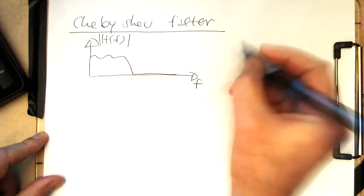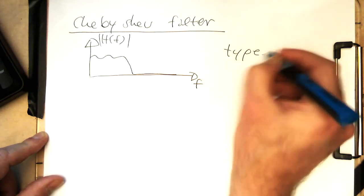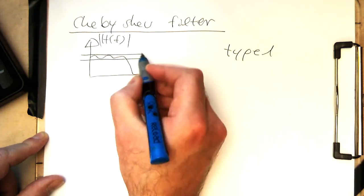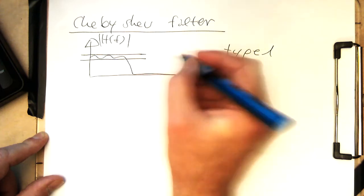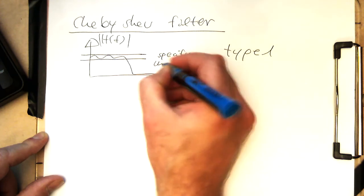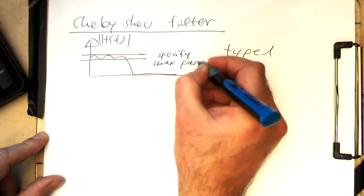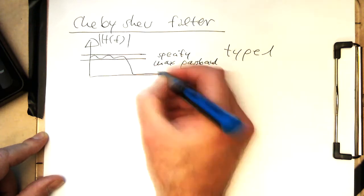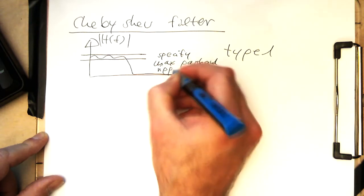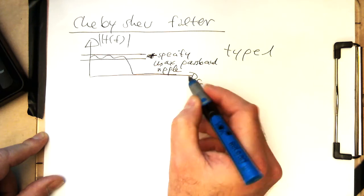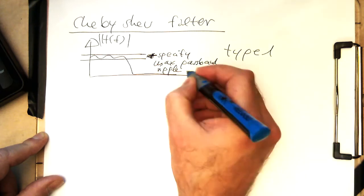And so if you have a type 1 filter, we can specify the maximum passband ripple here. Specify maximum passband ripple to that one here. So we can specify this maximum passband ripple in decibel.